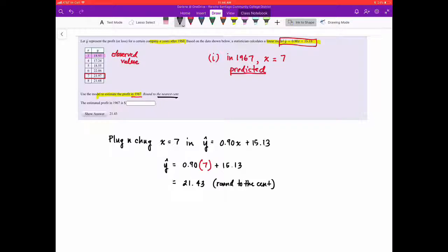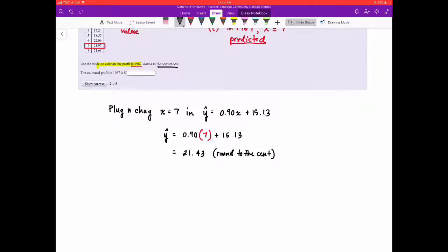So what does this mean? This means that we can predict the profit to be 21.43 in 1967. And if we look up here at the answer we can see that that is correct.